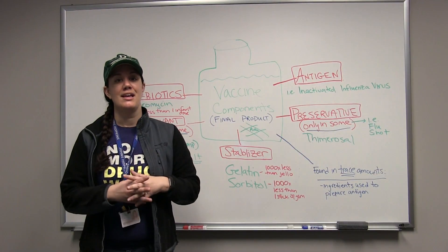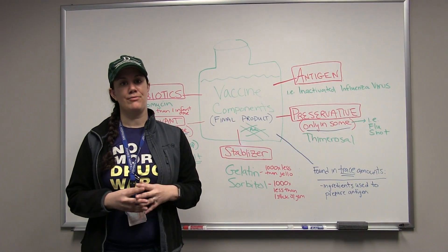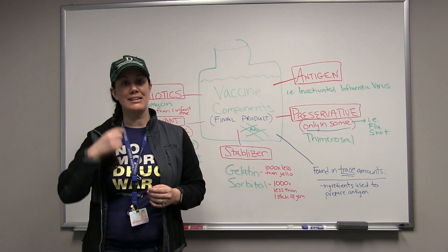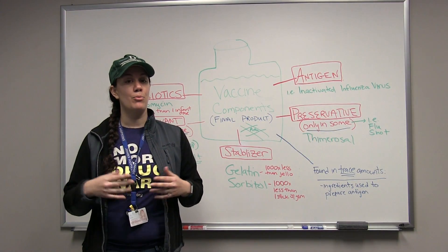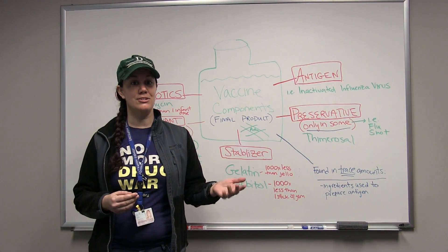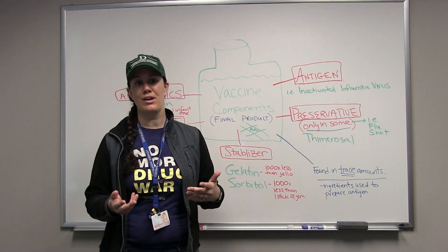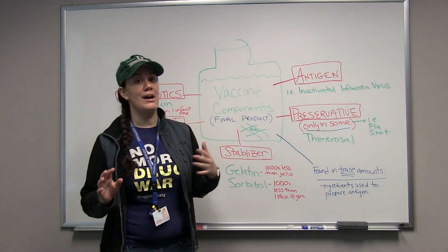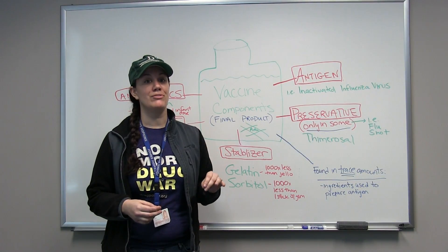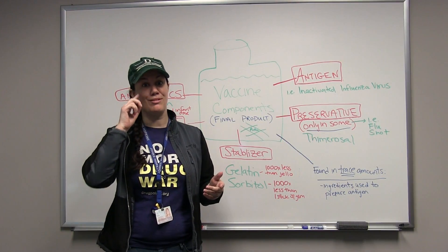So, vaccine components. The tough part about learning about ingredients is that every single vaccine has a slightly different combination of ingredients. That's why it gets really confusing, because the package inserts don't go over what the ingredients are doing, and they don't list the dosages of the ingredients either. So I put on the board a couple of specific examples of ingredients, but remember for each vaccine you have to look at the specific ingredients for that vaccine.